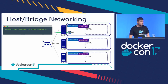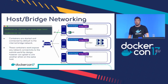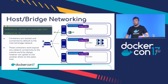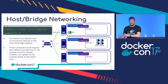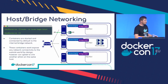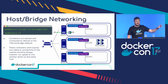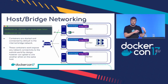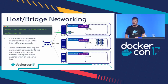Moving into bridge networking: if you run containers without connecting or exposing anything, by default they connect to the bridge network that comes as part of Docker. When you install Docker and start the daemon, a bridge network is created by default. When you start a container, it's given an internal IP address. The gateway address sits just underneath the bridge NAT device, and all containers created are given an IP address in that range. All containers connected to that bridge can speak to one another.